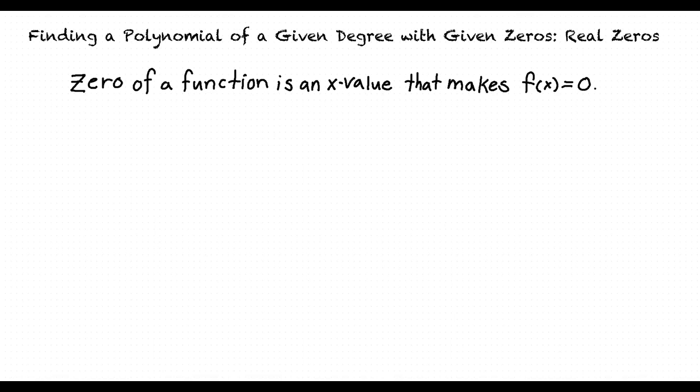When the zeros of a polynomial are given to us, and we need to find the corresponding polynomial, we use those zeros to find the factors of the polynomial. By multiplying these factors together, we get the desired polynomial.